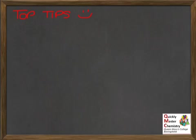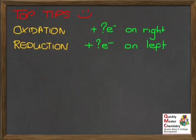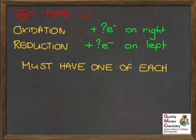A quick recap of the key skills for ionic half equations. For the oxidation half equation, you'll always get plus a certain amount of electrons on the right-hand side of the balanced equation. For reduction, you'll always get plus a certain amount of electrons on the left-hand side. When splitting a redox reaction into two half equations, one must be an oxidation half equation and the other must be a reduction half equation — one of each, or you've gone wrong.